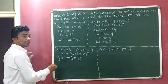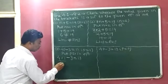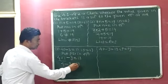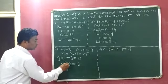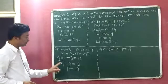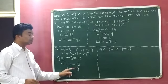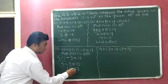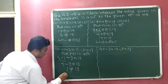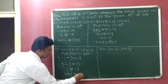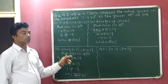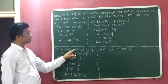Now we solve: 4 multiplied by 1 gives 4, so 4 minus 3 equals 13. Now 4 minus 3 gives 1, so we have 1 equals 13, which is not possible because 1 and 13 are different. So 1 is not equal to 13, meaning LHS is not equal to RHS. Therefore, P equals 1 is not a solution of the equation 4P minus 3 equals 13.